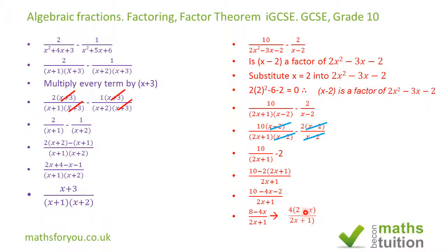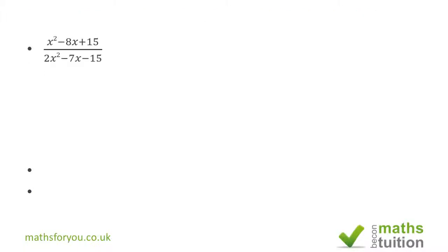Always factorize just in case the denominator and numerator have a common factor — in this case they haven't. That ends the second exercise. For the third one we need to factorize both the numerator and the denominator. The numerator gives us (x-3)(x-5), divided by 2x² - 7x - 15.